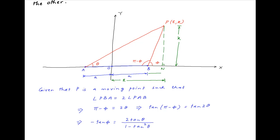Therefore, the distance BN is equal to h minus a. Now note that from triangle PNB, tan phi is equal to k divided by h minus a, and from triangle PNA, tan theta is equal to k divided by h plus a.